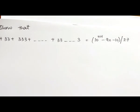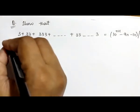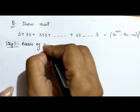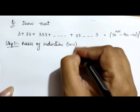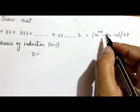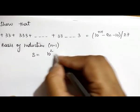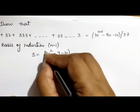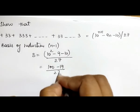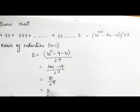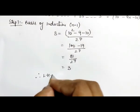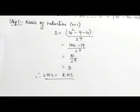We will do this question in the same pattern. Step 1 is the basis of induction. In this, we put n = 1. On the left hand side the first term is 3, and on the right hand side substituting n = 1 gives (10^2 - 9 - 10) / 27 = (100 - 19) / 27 = 81/27 = 3. Therefore, the left hand side equals the right hand side. This is step 1.